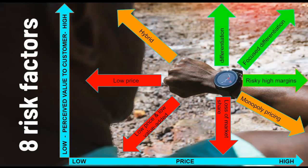Looking at the two orange arrows — the hybrid on the left at the top: you're still in development, the value is high, the price is low, but eventually you'll have to move it to a higher price point in future. Monopoly pricing could also be a problem; the government could step in with regulation and open up the market for competitors — Microsoft was in that position a few years ago. And then the green arrows: if you can differentiate or focus your differentiation on specific features and benefits of your product or service, you are in a really good position. Risky high margins will make you good money as long as that niche market is there to support your product.